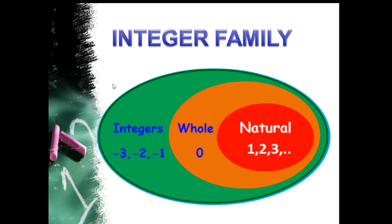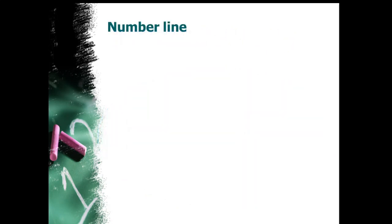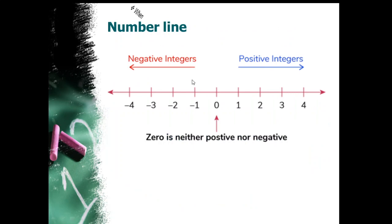Suppose you go to a mall. When you go to a mall, you can see in the lift there are buttons below 0 and above 0. Above 0, the lift moves upward — it is increasing step by step. But when you press a number below 0, you are going underground. Hence, it is written as minus. The same concept applies to integers when we learn through a number line.